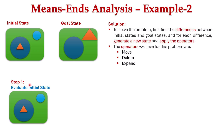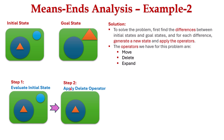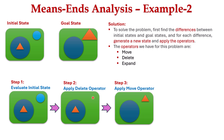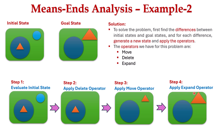In step 1, we evaluate the initial state by identifying differences from the goal state: there is no small blue circle at the top right corner, and there is a larger triangle in a different position instead of a small triangle inside the larger circle. In step 2, we apply the delete operator to remove the small blue circle from the top right corner. In step 3, we apply the move operator to move the smaller triangle from inside the circle to the top right corner. In step 4, we apply the expand operator to increase the size of the triangle so it matches the goal state.